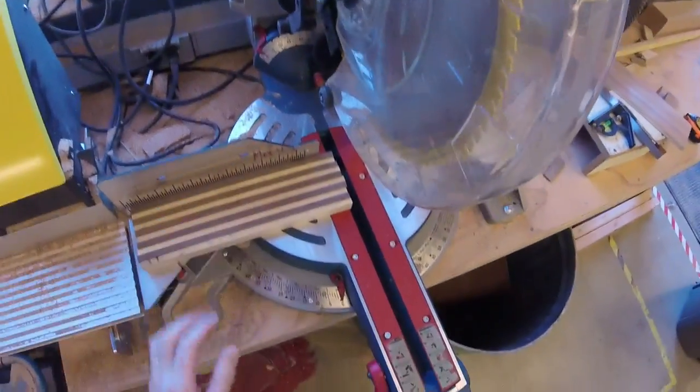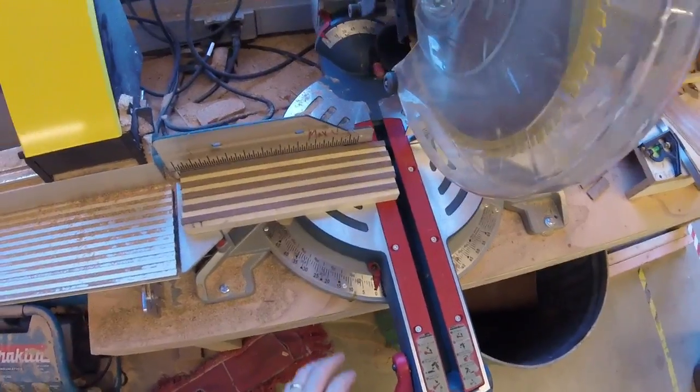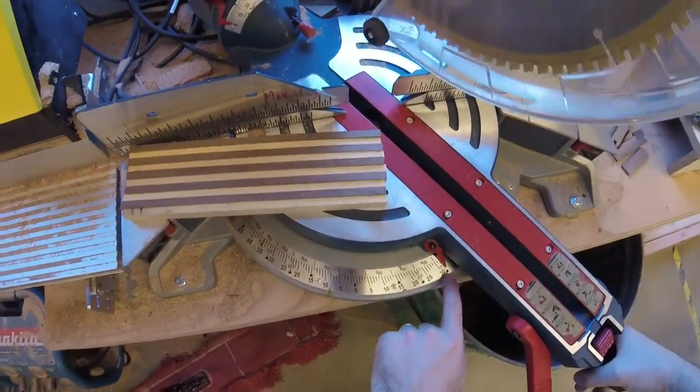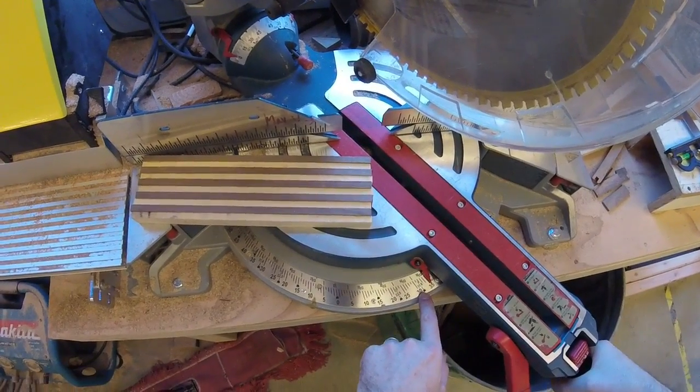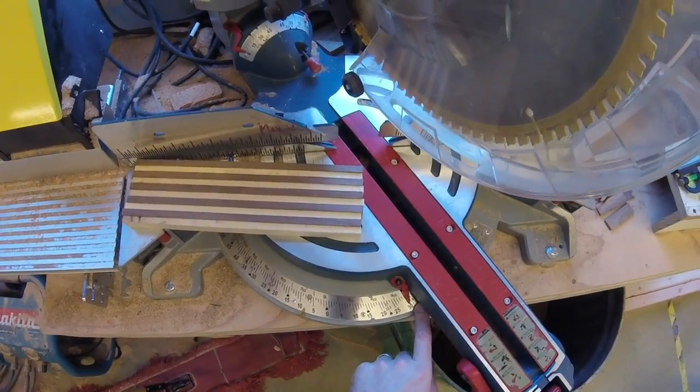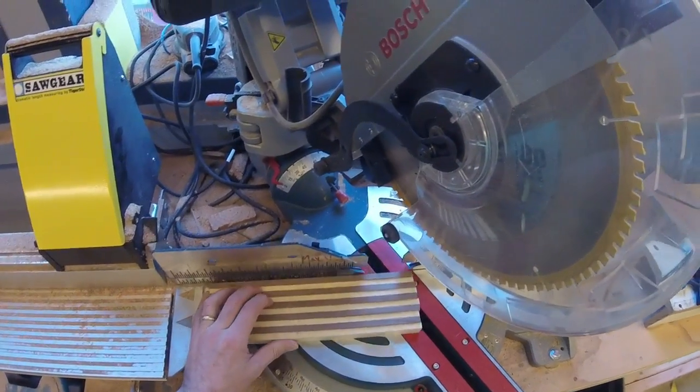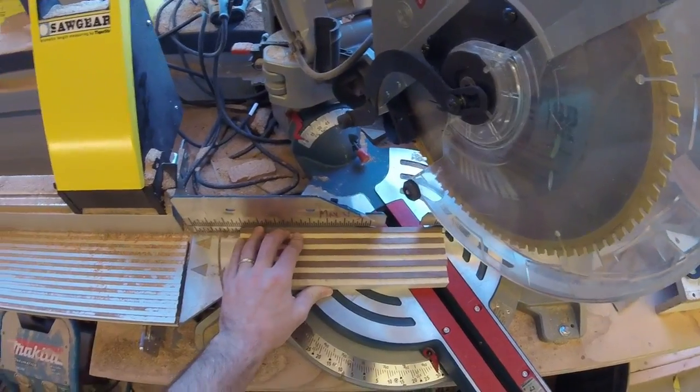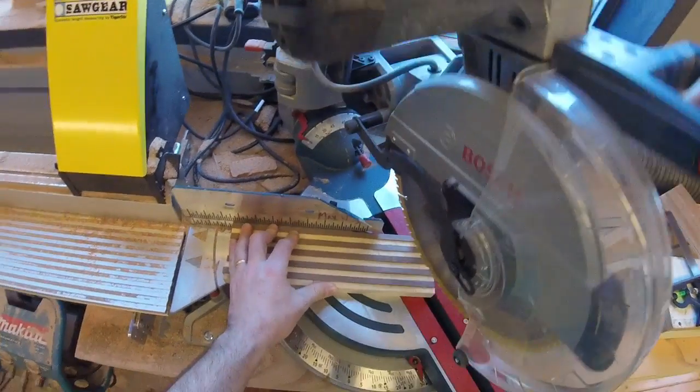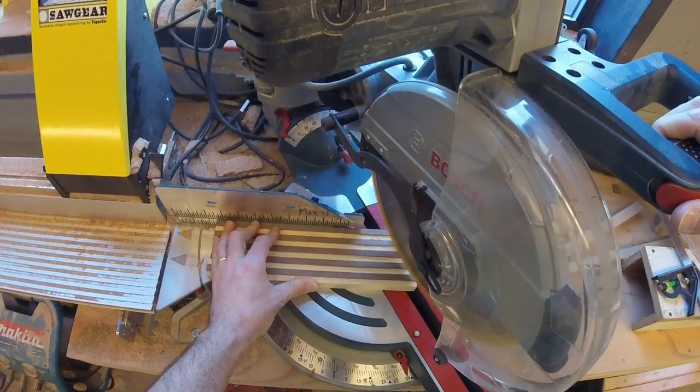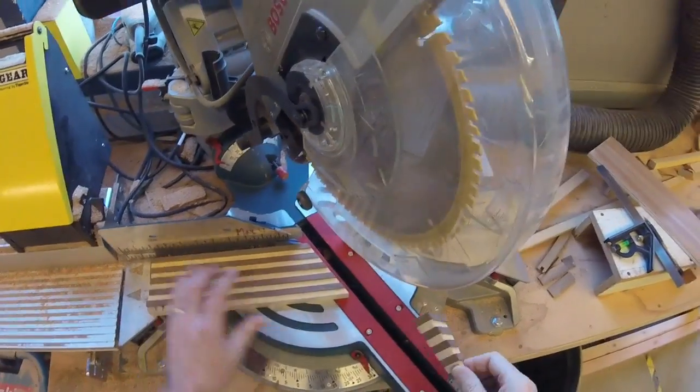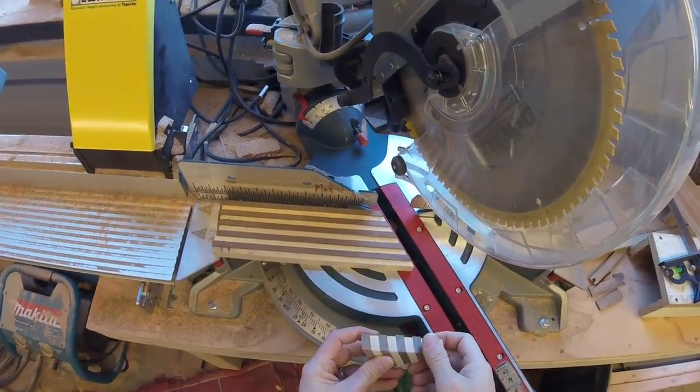The next step is to go to the miter saw, loosen this handle and we're going to go to 30 degrees. Notice the stop here is at 31.6 degrees. I'm going to rotate this back and tighten that in place. Okay so my first cut is just to get it started here. Okay that's what it's going to start to look like there.